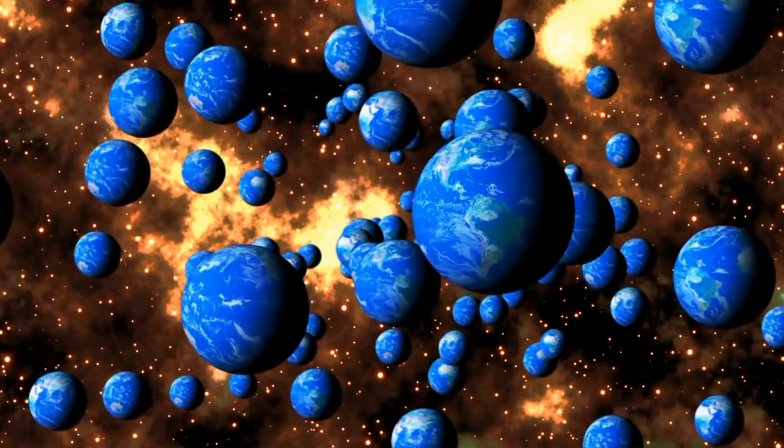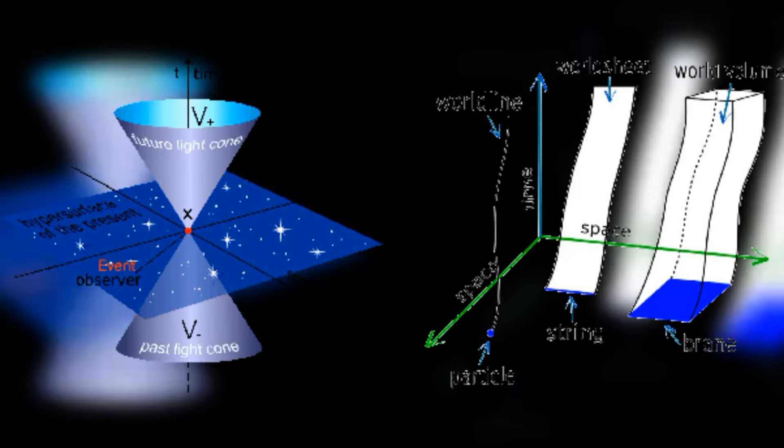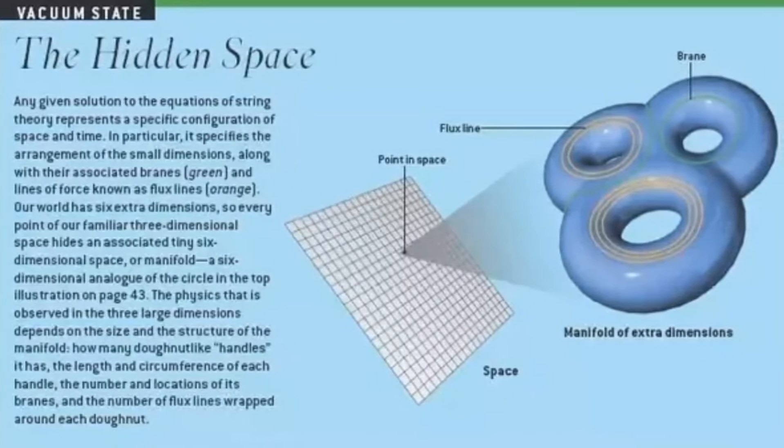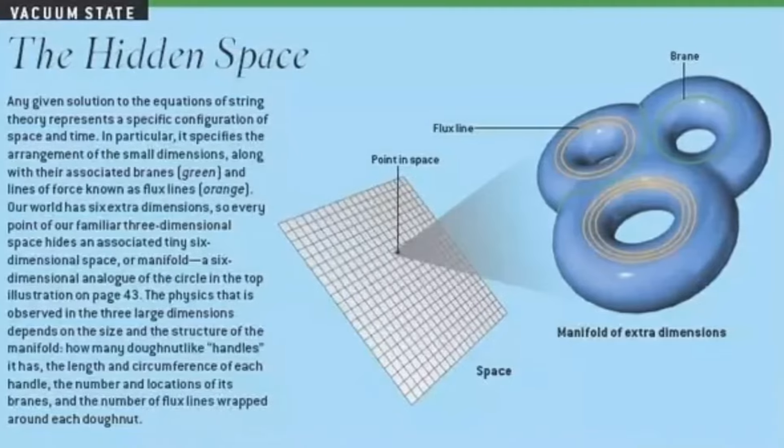Conceptually, the idea of extra dimensions challenges our intuitive understanding of space. In our everyday experience, we perceive three spatial dimensions—length, width, and height—and one time dimension. String theory proposes the existence of additional spatial dimensions, potentially hidden or compacted, beyond our direct perception. Understanding how these extra dimensions interact with the familiar three spatial dimensions and influence the behavior of strings adds complexity to the overall framework of string theory.